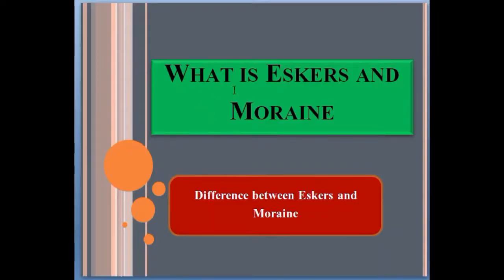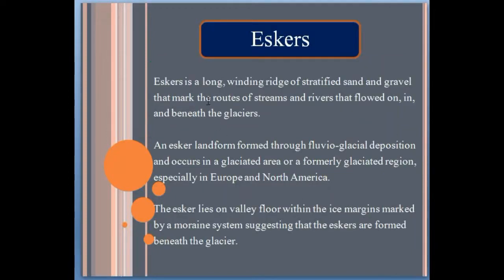Hello guys, so today we talk about what is eskers and moraines. In this video we also talk about the difference between eskers and moraines. An esker is a long winding ridge of stratified sand and gravel that marks the routes of streams and rivers that flowed on, in, and beneath the glacier. An esker is a landform formed through fluvial glacial deposition.